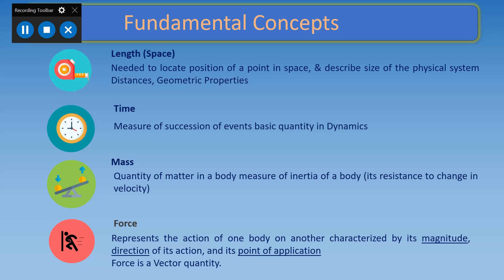The third fundamental quantity is mass — the quantity of matter in a body. Mass is a measure of inertia of the body, or its resistance to change in velocity. The fourth is force, which represents the action of one body on another, characterized by its magnitude, direction of action, and point of application. Force is a vector quantity — it has a point of action, direction, and magnitude. These are the four fundamental concepts: length, time, mass, and force.